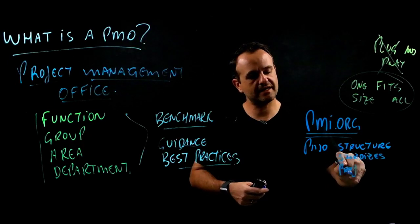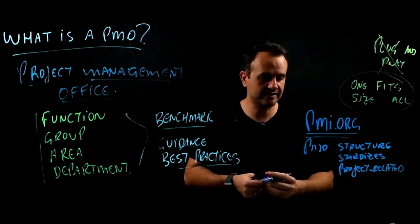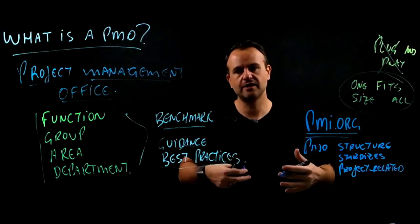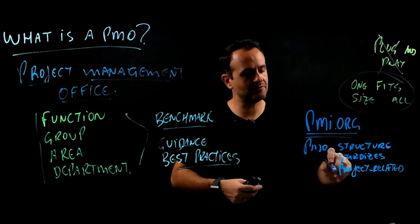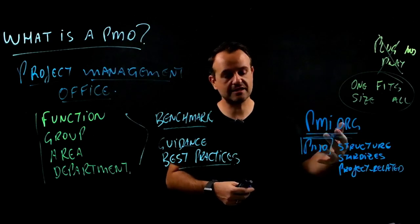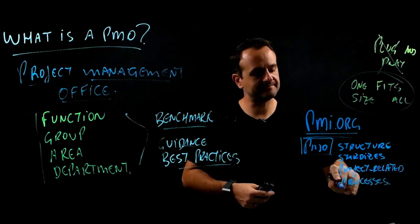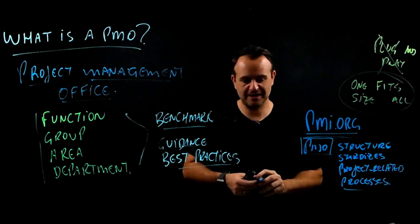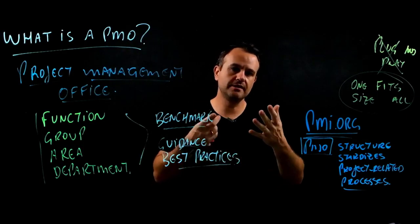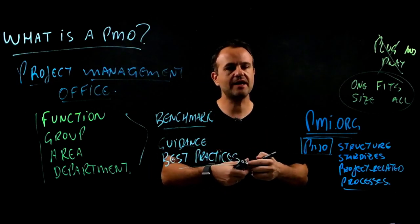What a PMO does really depends on your organization and its maturity level. I'll explain project management maturity — project, program, and portfolio maturity — in the next videos. The PMO is responsible for standardization, facilitation, and oversight of project-related processes and activities. Right now your organization might be trying to implement a PMO, or you may be new to project management and want to implement one.